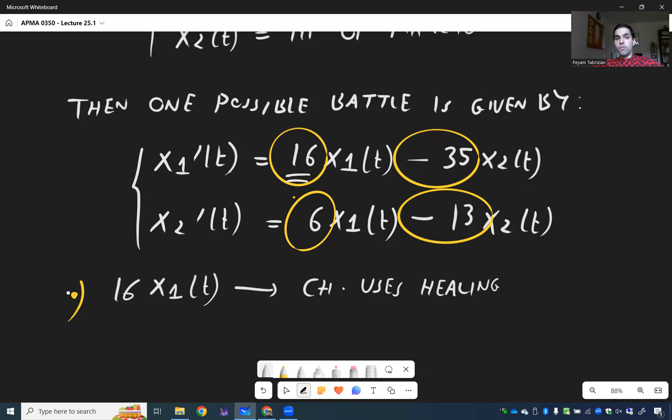So 16 X1 of T means Charmander uses healing. On the other hand it gets some negative effect from Pikachu, decreases minus 35 X2, and that is damage from Pikachu, it's like Pikachu body slams.